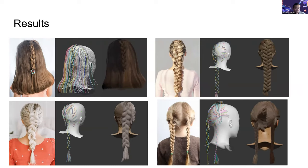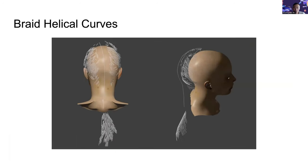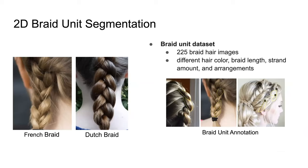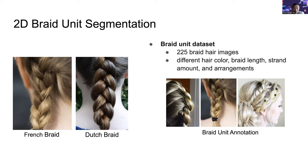The moderator asked about the use of the 225 annotated images — whether they were used to train the segmentation network. The presenter confirmed that the images were manually annotated to generate braid unit patches, then used to train Mask RCNN for instance segmentation to detect multiple braid units in an image. The moderator noted this manual annotation process could be very time-consuming and asked whether automating it was considered. The presenter acknowledged it as a good idea, noting that manual annotation was necessary initially since no dataset was available.